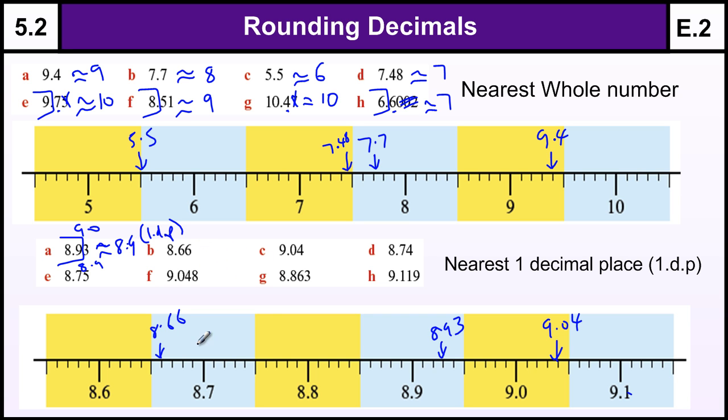8.66, we can see that's closer to 8.7. 9.04 we can see that's closer to 9.0. We must put the .0 in to show that we have rounded to that one decimal place and we know that decimal place is 0.